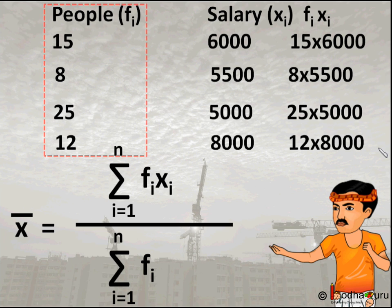We sum all this up and divide by sum of frequencies, that is 15 plus 8 plus 25 plus 12, and get the mean x̄. This is what we learnt in the last video.